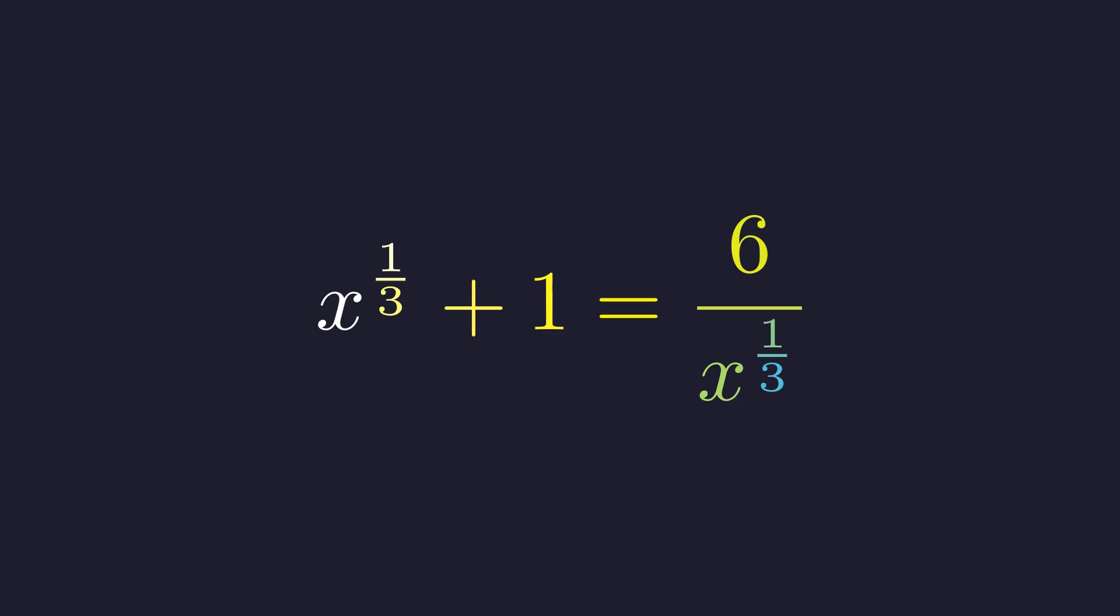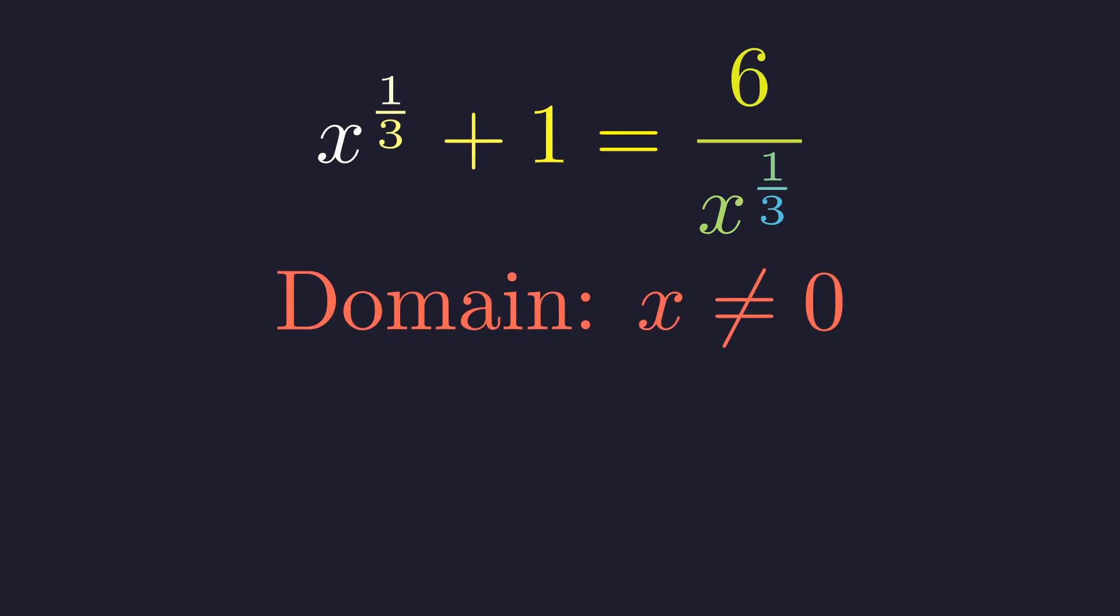We're solving for x, where x to the one-third plus one equals six divided by x to the one-third. Before diving in, let's address the constraint. x cannot be zero. If it were, we'd be dividing by zero on the right side, which is undefined.